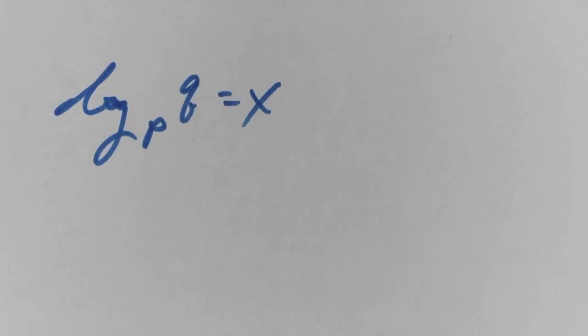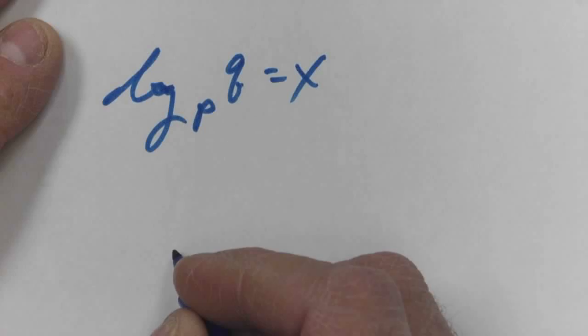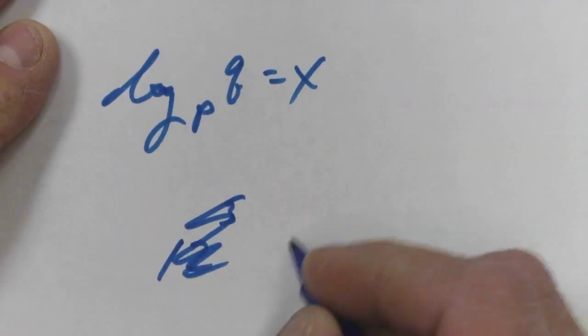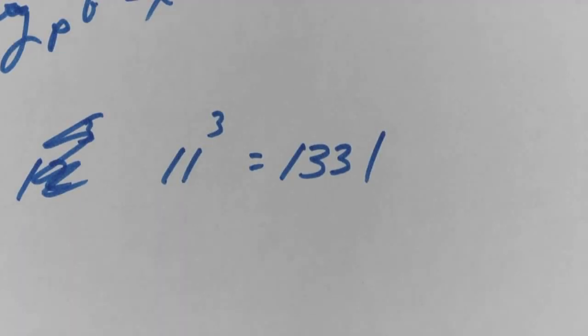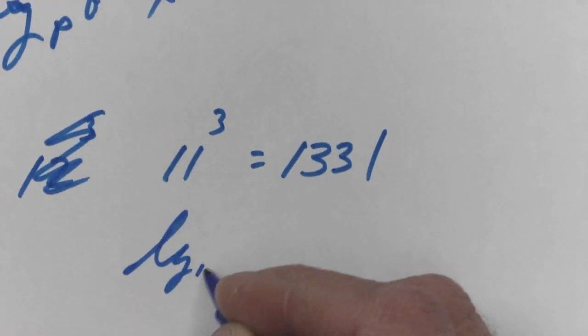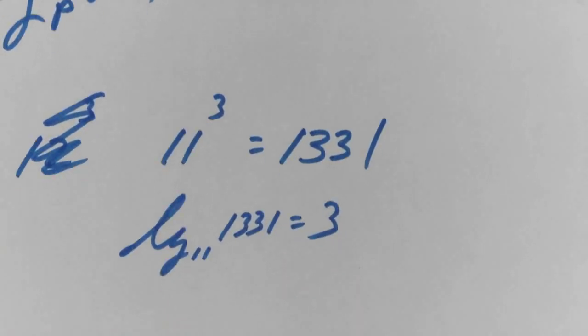So log base P of Q equals X. Write what that means. Good, good, good, yes. I should have whooped you out of my glasses. What if I say this? Eleven to the third equals 1331. Rewrite that as a logarithm. So, and this is where I'm talking about theory. If you understand what the log is, you're always going to set it equal to the exponent. The log is the exponent.